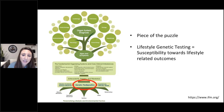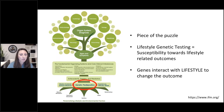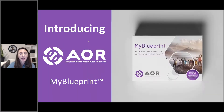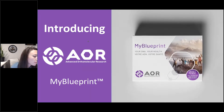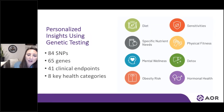Lifestyle genetic testing tells us about our susceptibility towards lifestyle-related diseases, but it tells us more specifically what lifestyle choices to make in order to change the outcome of these genes and said diseases. I'm really excited to be working with AOR in helping them to produce and develop this genetic test called My Blueprint, which looks at these key areas of lifestyle interventions to bring this technology and information to the public as a whole.